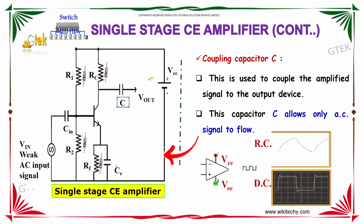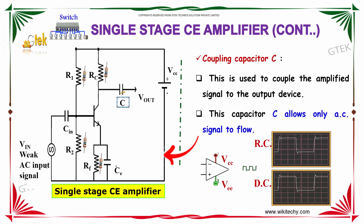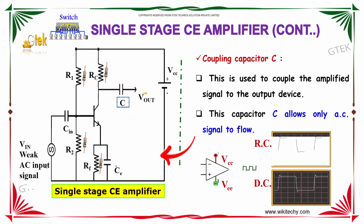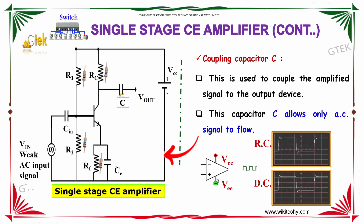So, we will talk about the coupling capacitor. This is used to couple the amplified signal to the output device. The capacitor allows only the AC signal to flow.